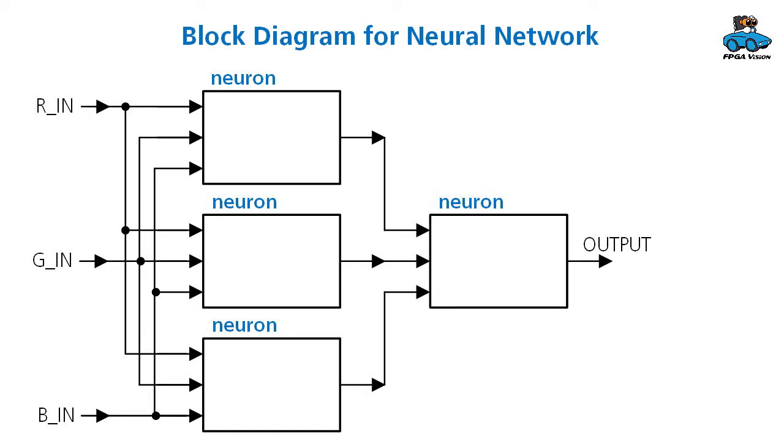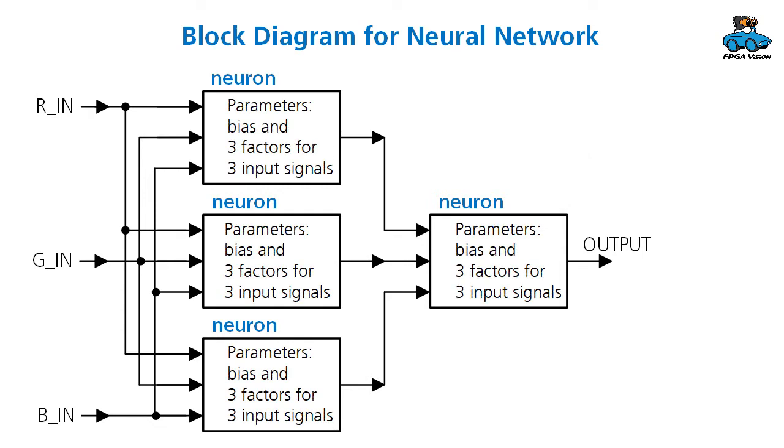The block diagram follows the structure of the neural network. We have the three input signals: red, green, blue. Then we have three submodules for the three neurons of the hidden layer, plus another submodule for the neuron of the output layer. The neurons get the parameters of the training. Every neuron gets as an information the bias, plus three factors for the three input signals of the neuron.